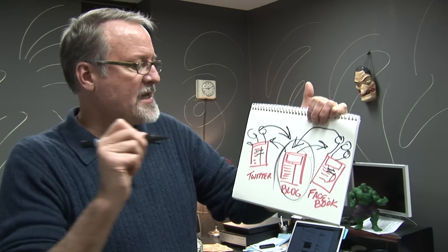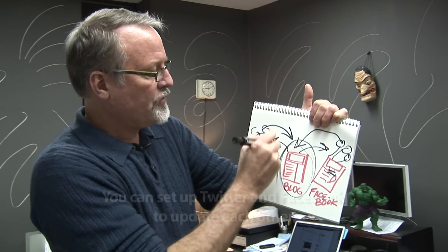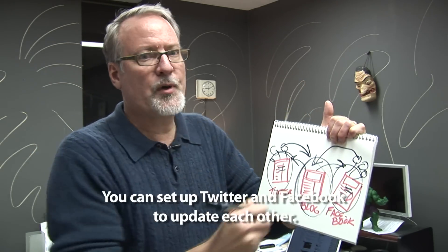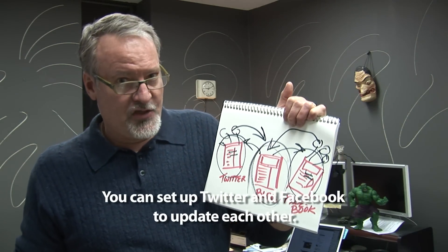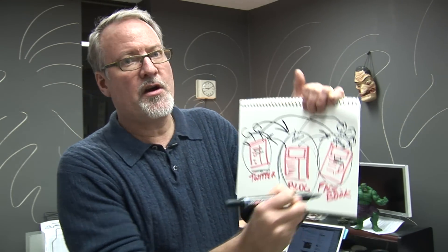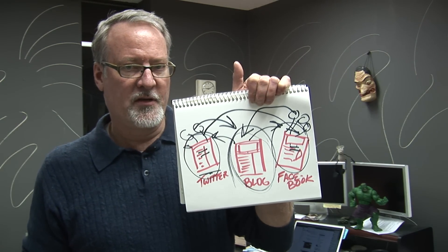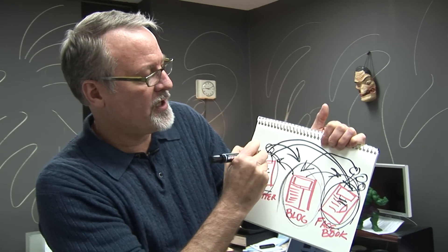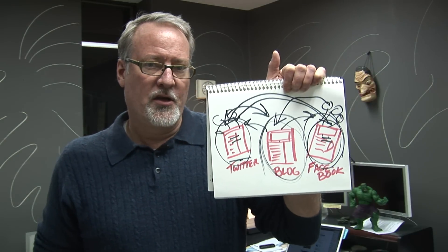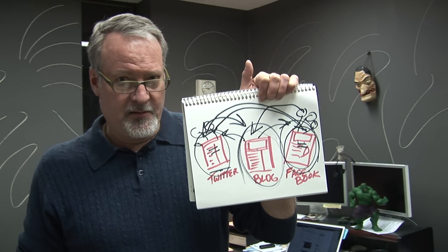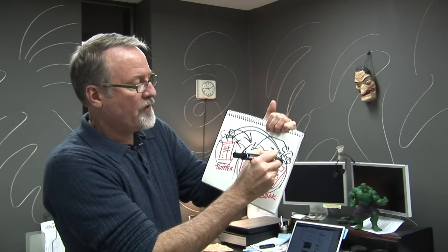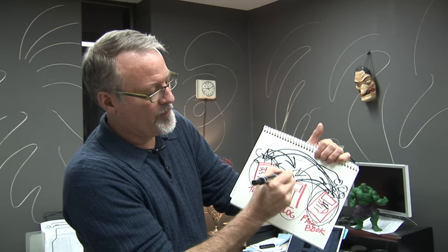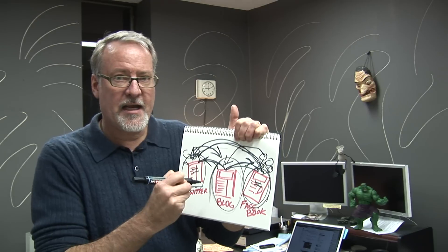But it's not just that. You can also set up Twitter and Facebook to update each other. You can write a tweet that will also be posted on your Facebook page. You can write a Facebook status that will also update your Twitter feed. Those two can be connected, and all of these platforms can be connected.